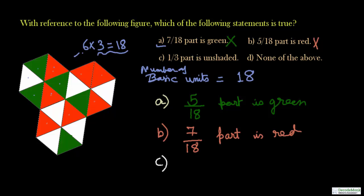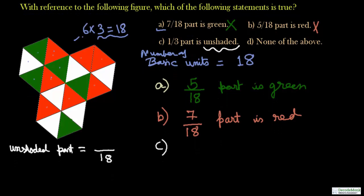1 by 3 part is unshaded. So it is telling something about the unshaded portion, so let us calculate the unshaded portion. As usual, 18 will come in the denominator and the numerator will contain the numbers of unshaded triangles. Let us count the number of unshaded triangles: one, two, three, four, five, six. So unshaded triangles total number is six, so six will come at the numerator, so 6 upon 18 is the unshaded.